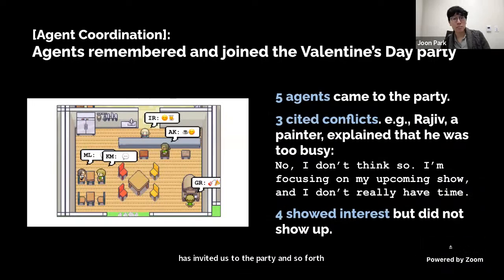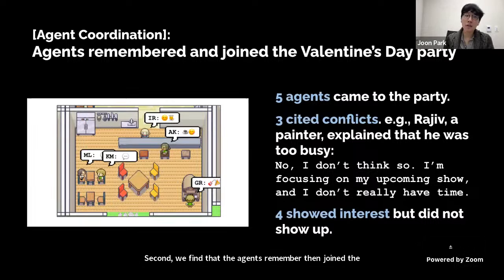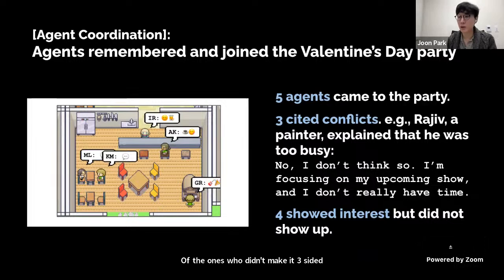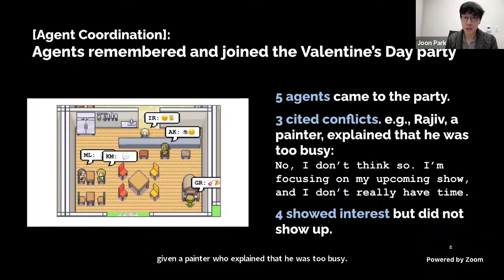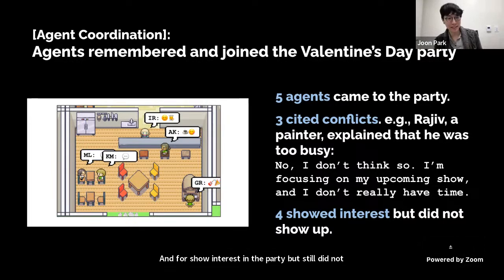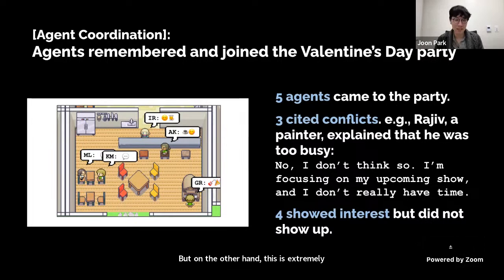Second, agents remembered and joined the Valentine's Day party. Five agents came to the party. Of those who didn't make it, three cited complex reasons — like Rajiv, a painter who explained he was too busy — and four showed interest but still didn't show up. This is difficult to evaluate: on one hand it may be an error in memory retrieval, but on the other hand, this is extremely realistic human behavior.